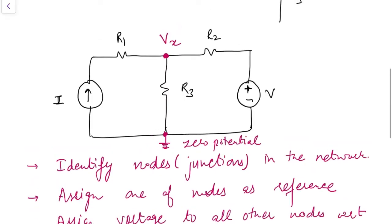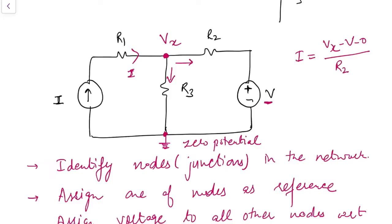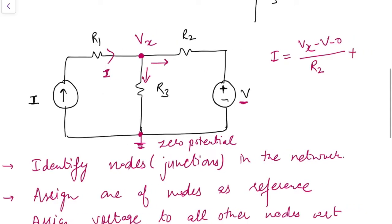Looking at this network, the direction of current through R1 is towards the node since a current source is connected and its direction is already marked. We don't know the direction of current through R2 and R3, so let's assume both are outgoing. The KCL equation becomes: incoming current I equals current through R2 which is (Vx minus V) divided by R2, plus current through R3 which is Vx divided by R3.